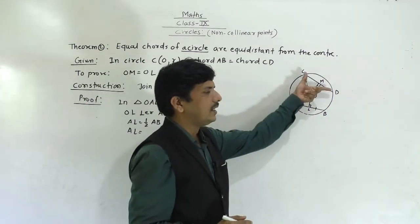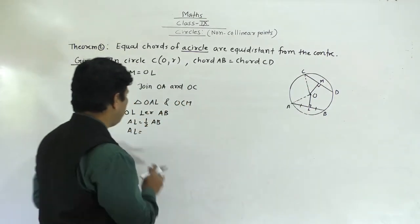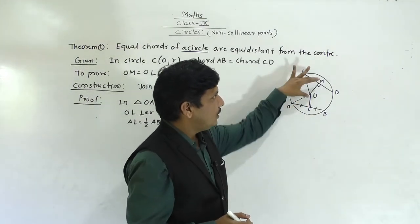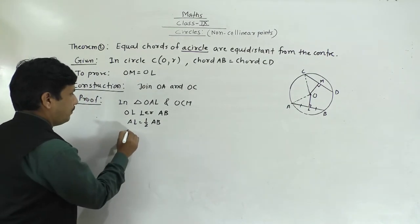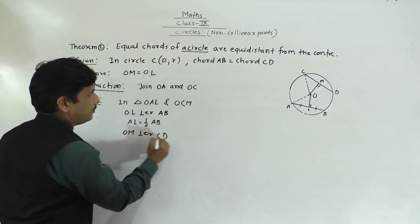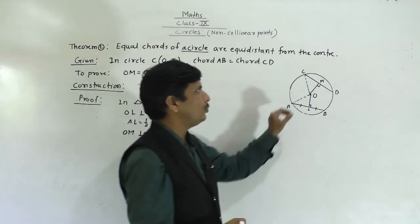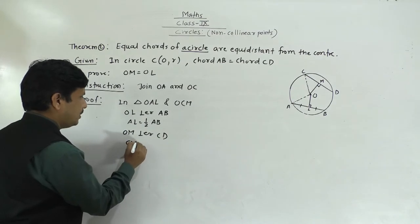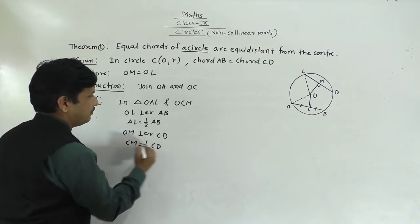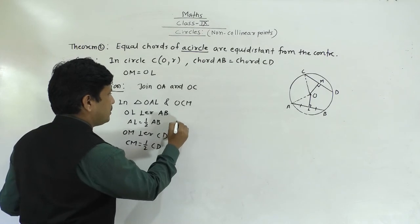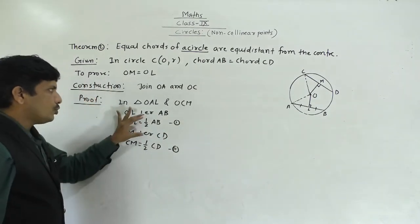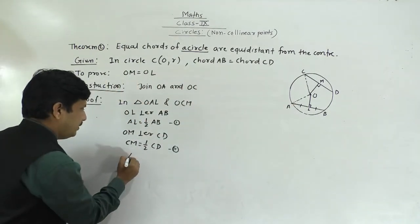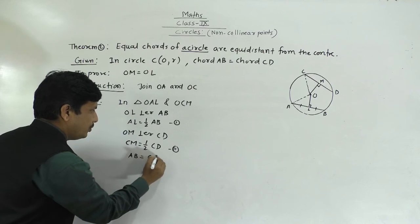Now AB equals CD is given. Since OL is perpendicular to AB, AL equals half of AB; since OM is perpendicular to CD, CM equals half of CD. Because AL equals CM (from CPCT), and half of AB equals half of CD, we get AB equals CD.